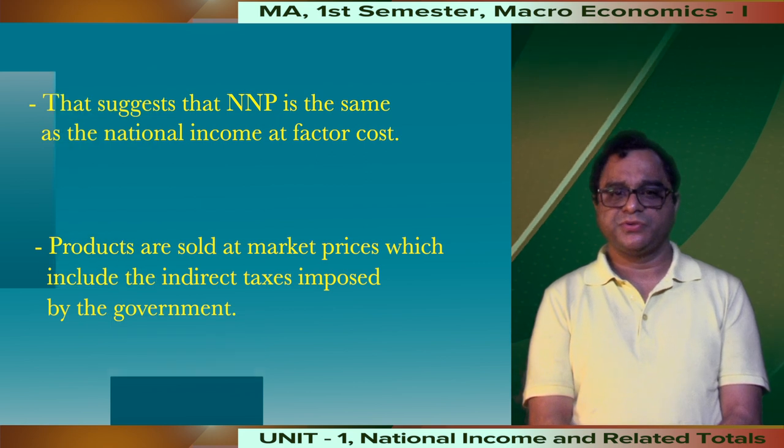Products are sold at market prices which include the indirect taxes imposed by the government. For example, indirect taxes are levied on commodities such as GST on packaged food and cloth. As a result, the market value of the national product exceeds the income paid to the factors of production by the amount of indirect taxes. At the same time, some products are subsidized and sold below their production cost, so their market price is less than their factor cost. Because of these differences, NNP at market price equals NNP at factor cost minus indirect tax plus subsidies. In India and the majority of countries, it is the NNP at market price that is taken as the national income of the country.